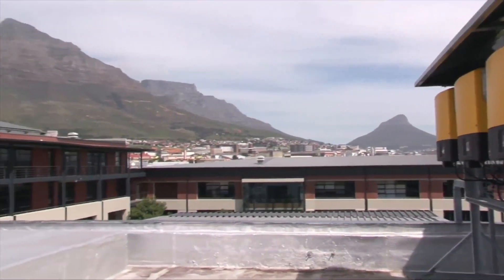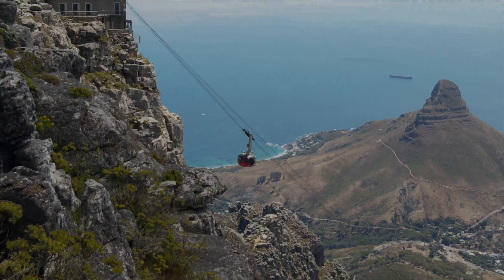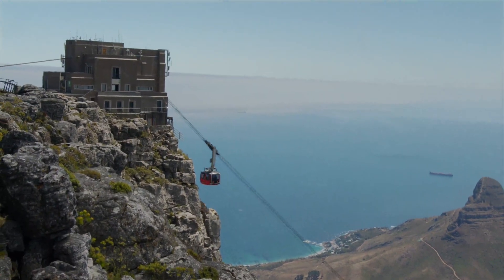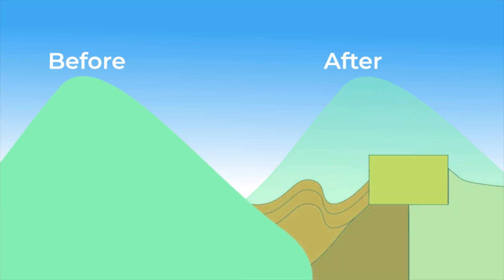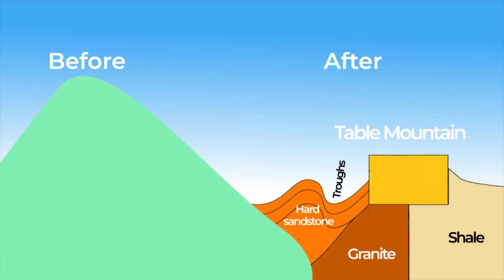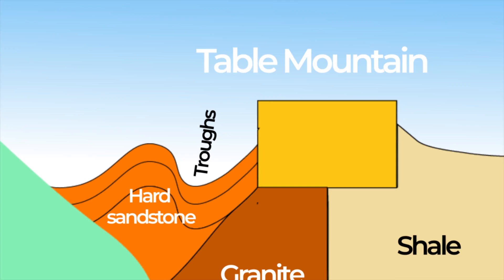Over the years, the folded landscape began to weather and erode, but the exposed crests of the fold eroded before the troughs did. This meant that once the hard sandstone layer of the crest was worn away, the soft shale beneath it weathered more rapidly than the remaining sandstone troughs. The shale surrounding these troughs continued to erode further and further, leaving the hard sandstone troughs behind, eventually resulting in what was once a flat valley floor becoming today's flat-topped Table Mountain.